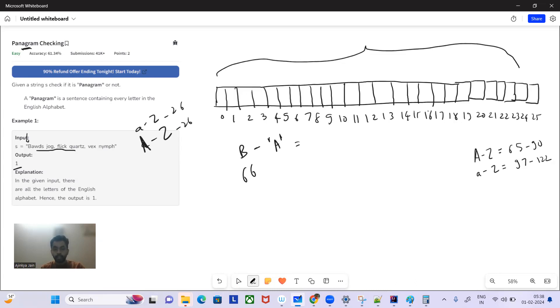So what is ASCII of B? ASCII of B is 66. And ASCII of A is 65. So the index it will give is 1. So we are going to mark it as true.